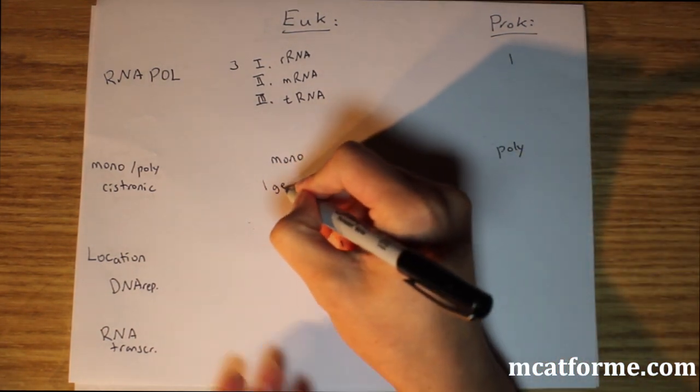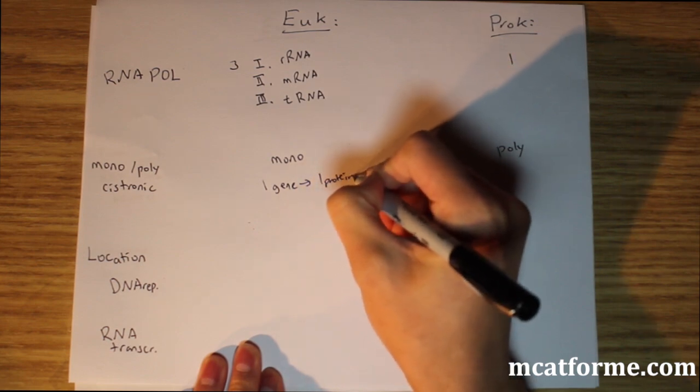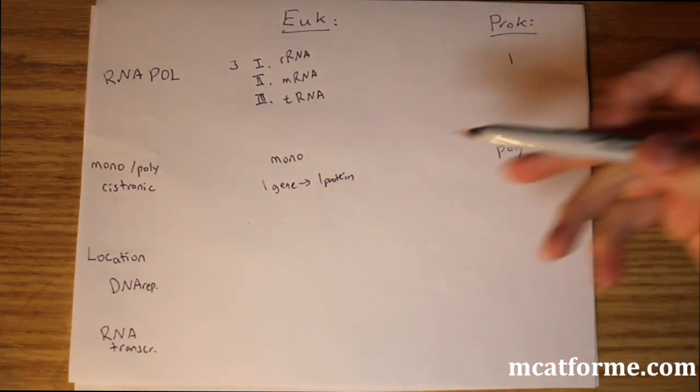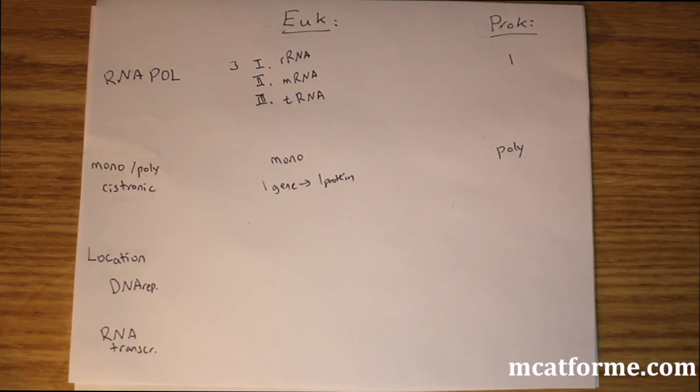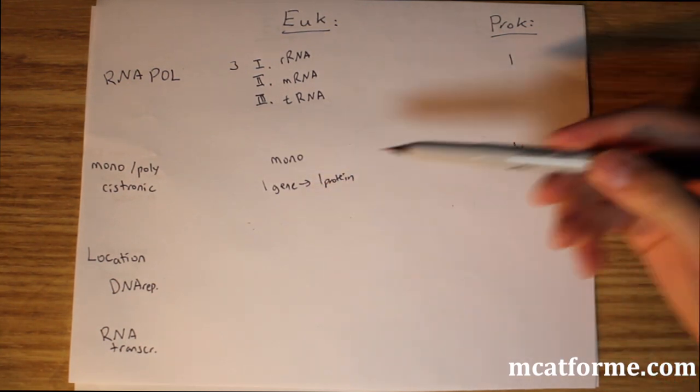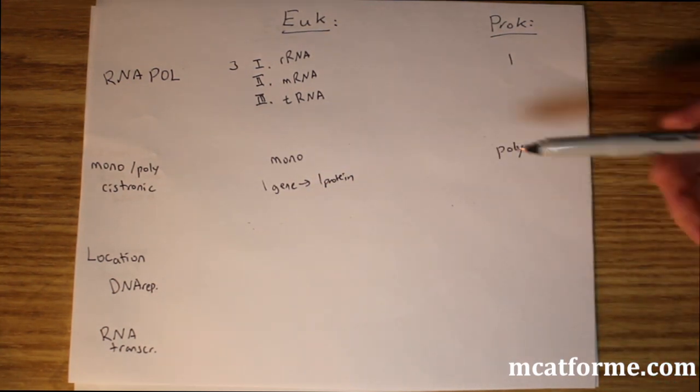One gene to one protein makes sense because the eukaryotic genome is so big. We can afford to have one gene be specific for each protein. But prokaryotes have such a small genome that they need to have multiple overlaps.